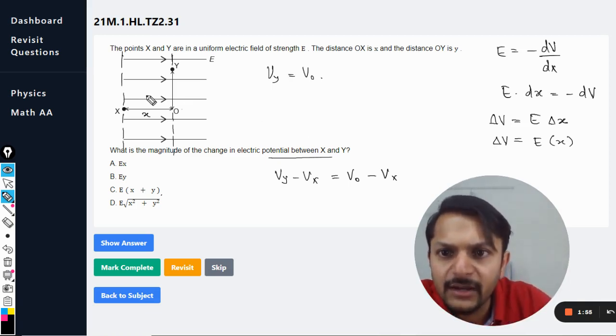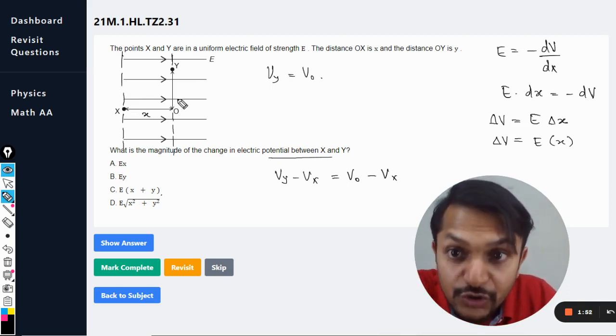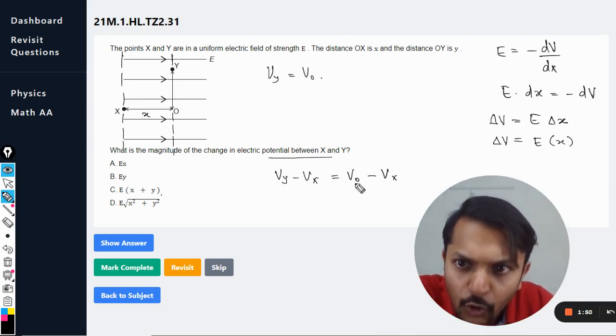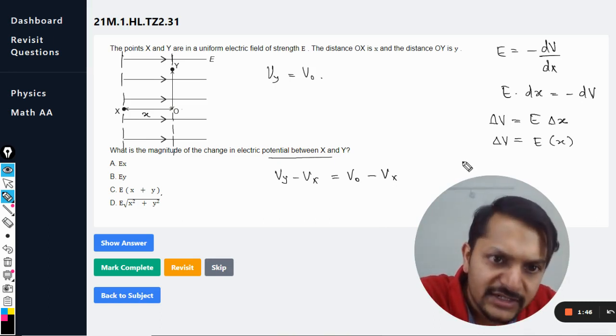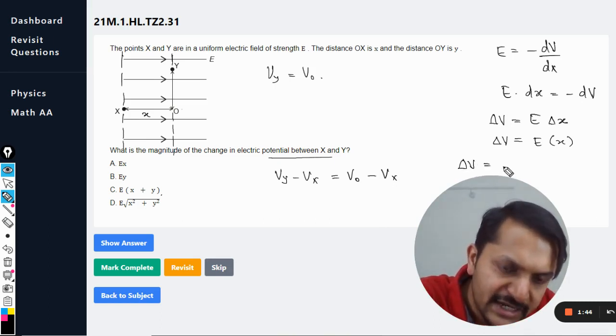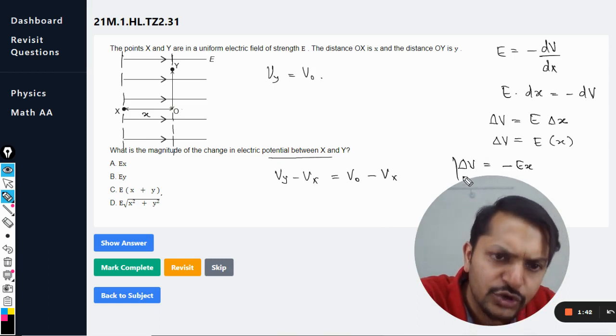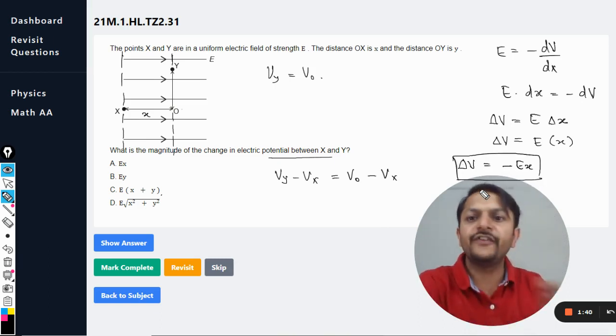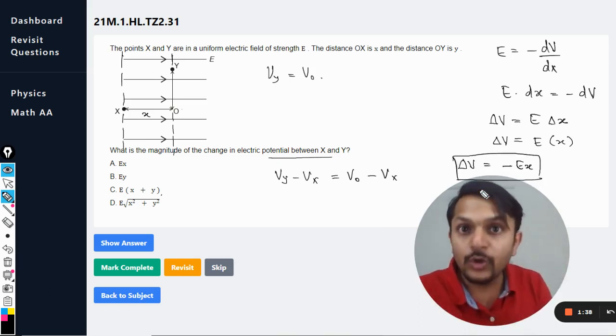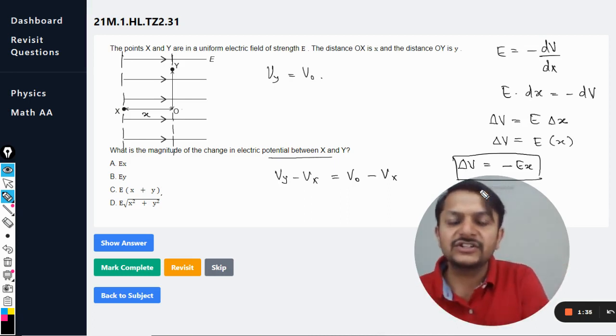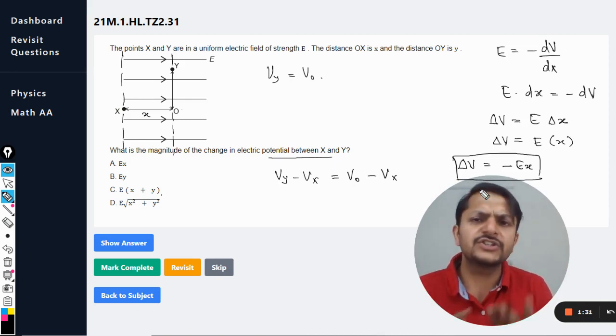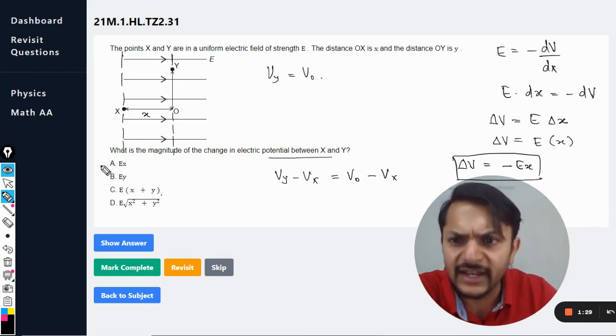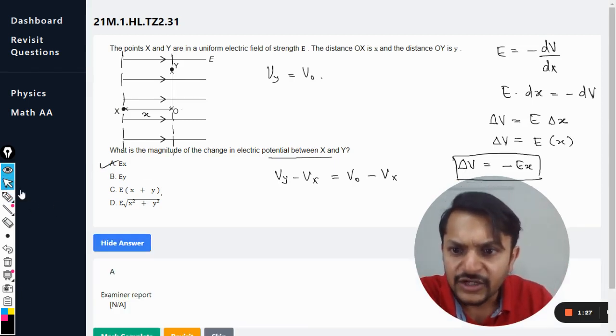Yes, there will be a negative sign because down the line the potential reduces. So V_O minus V_X should be negative. So the answer technically should be negative of Ex, no doubt about that, because finally you are at lower potential. So final minus initial will give you a negative value, but that is not given in our options, so no need to worry about the negative sign. Hence the answer is definitely A. So we can see yes, the answer is A.